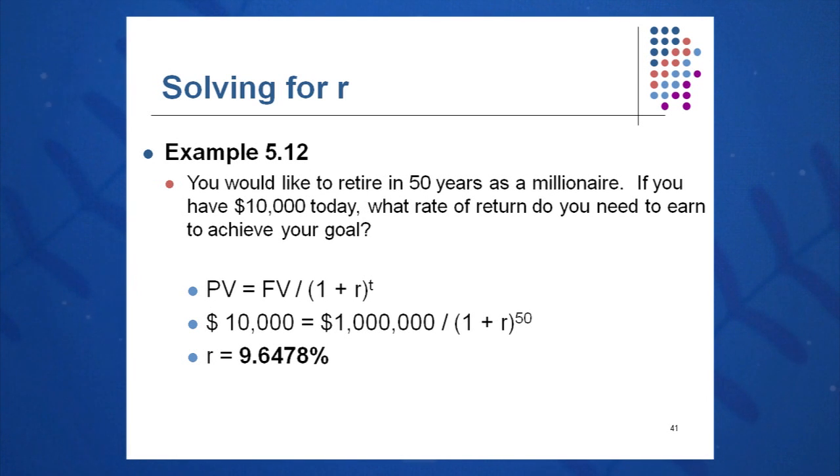What rate must you invest it to get there? Again, it's very similar to the Who Wants to Be a Millionaire example, except in that case we started later at age 21. This time you have 50 years to invest it and you can only start out with $10,000. And so you need to earn a rate of about 9.65% to get there.